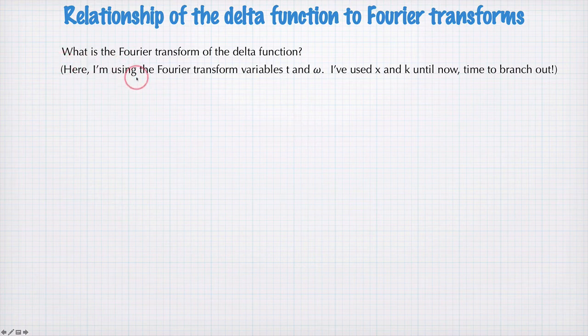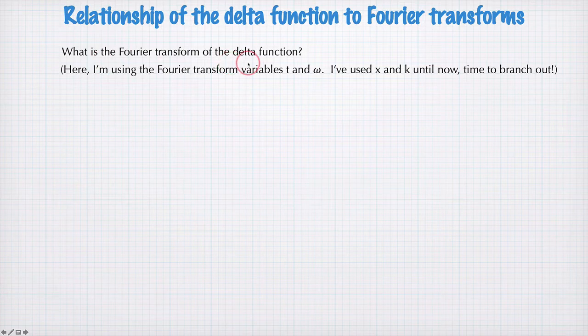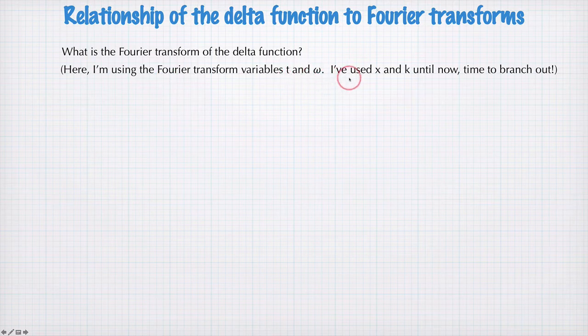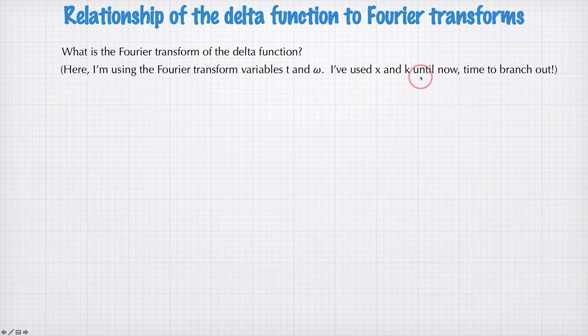So to begin using the delta function with Fourier transforms, first let's find out what the Fourier transform of the delta function actually is. Now in the following, I'm going to use the Fourier transform variables t and omega. Up till now I've used x and k, but it's time to branch out because the course is going to use both these Fourier transform pairs quite a bit.